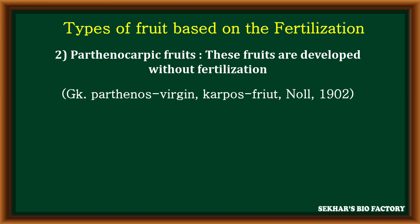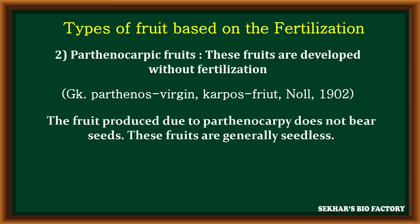The term parthenocarpy — in this, 'parthenos' means virgin and 'carpus' means fruit. This term was given by the scientist Noll in the year 1902. The fruits produced due to parthenocarpy, due to absence of fertilization, have no seeds — so all parthenocarpic fruits are generally seedless fruits.